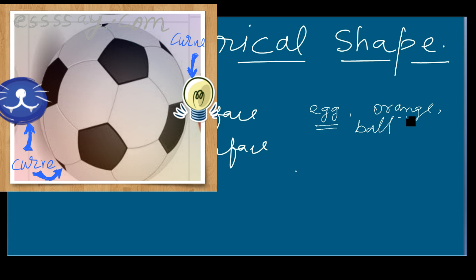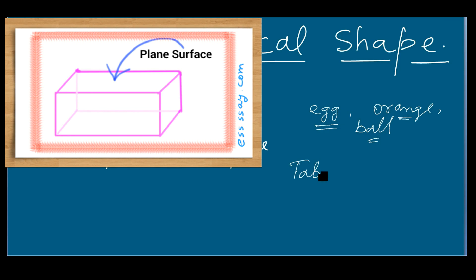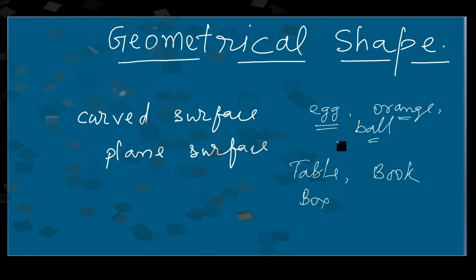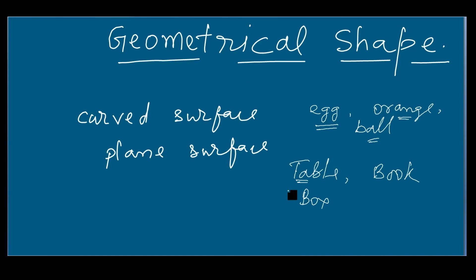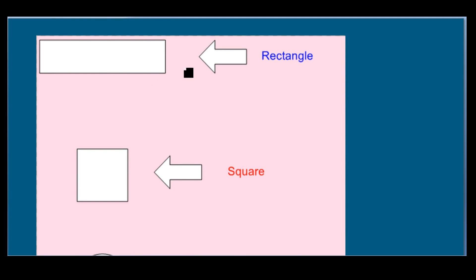But if you look at objects like a table, book, or box, you can feel that the surface of these objects is different from those of an egg, ball, or orange. These objects have a plane surface. Now let's start about geometrical shapes.